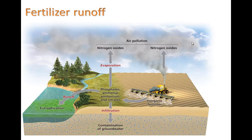This can lead to fertilizer runoff. In this diagram, a tractor is applying inorganic fertilizer including phosphates, ammonia, ammonium, and nitrates — all things that can lead to eutrophication. Some of this fertilizer evaporates, bringing nitrogen oxides into the air. Nitrogen oxides are a form of air pollution and can also act as a greenhouse gas and to some degree cause acid rain. Some fertilizers can also infiltrate into the groundwater, contaminating it.